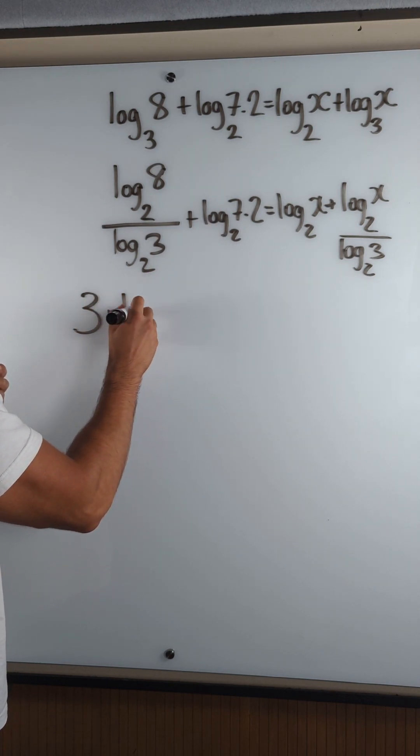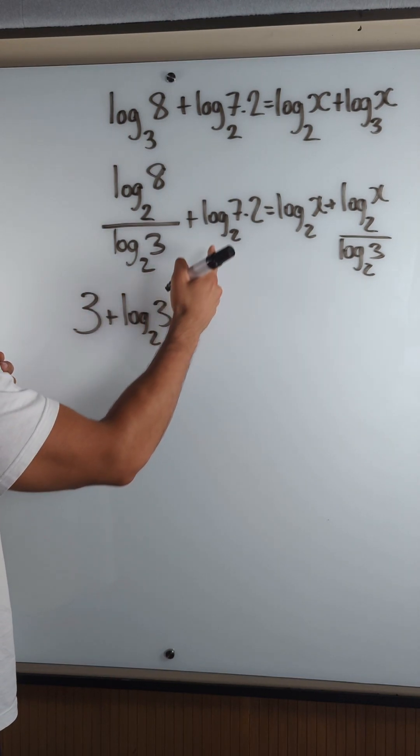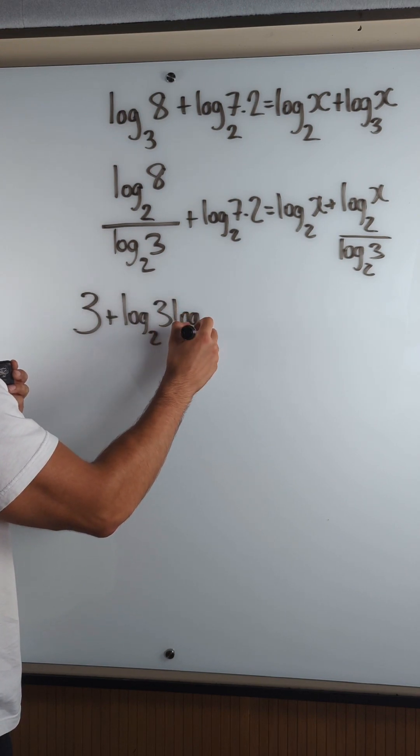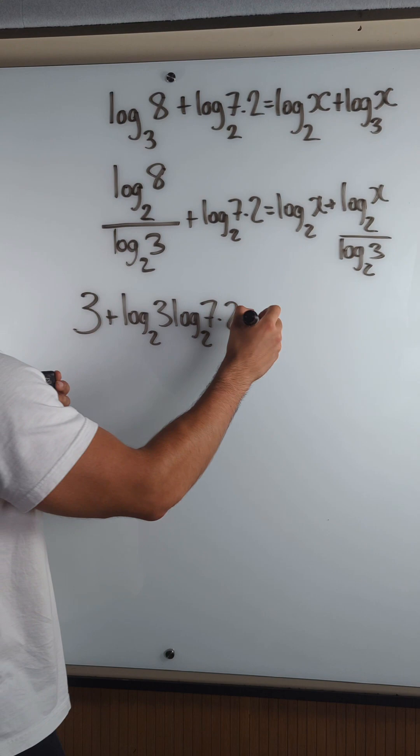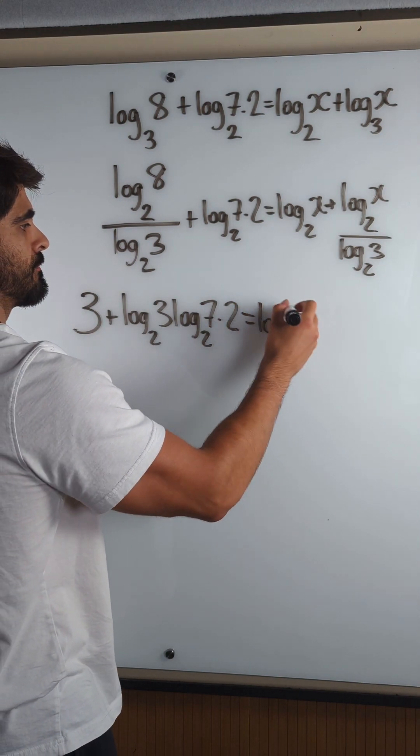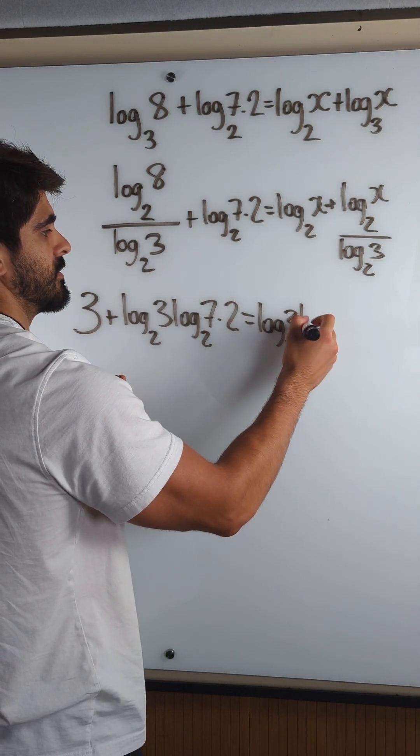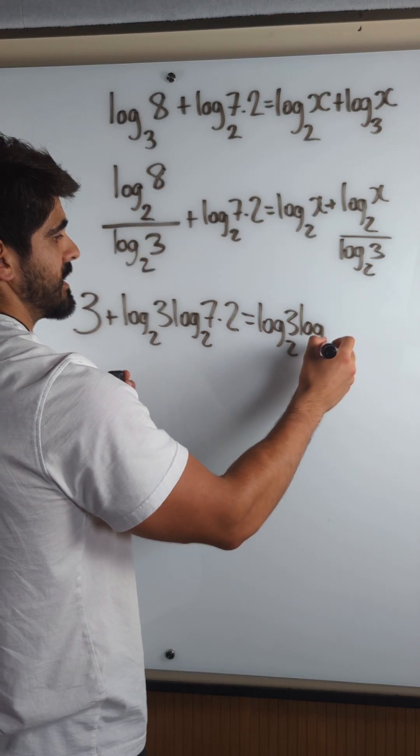This would be log base 2 of 3 times log base 2 of 7.2 minus that times log base 2 of 3 times log base 2 of x.